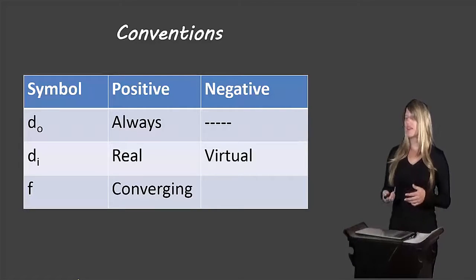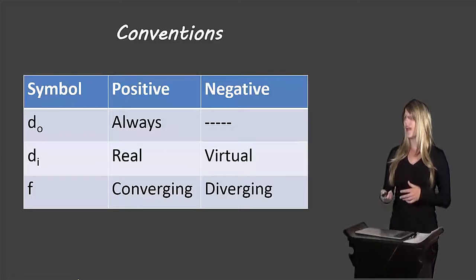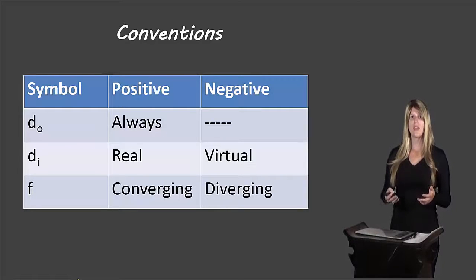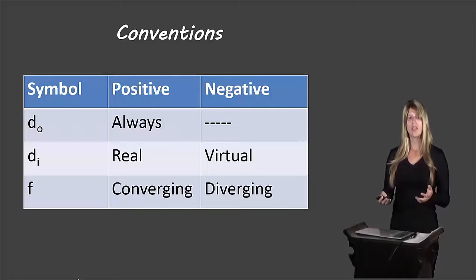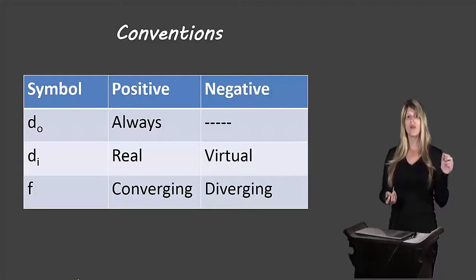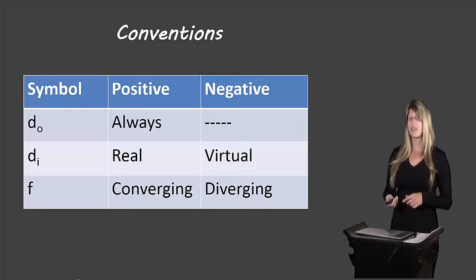For the focal length, if it's a converging lens it will be positive, and if it's a diverging lens it will be negative. So if we measure the focal length to be 3 centimeters, but we're dealing with a diverging lens, in our equation we would write negative 3, because the negative indicates the diverging lens.